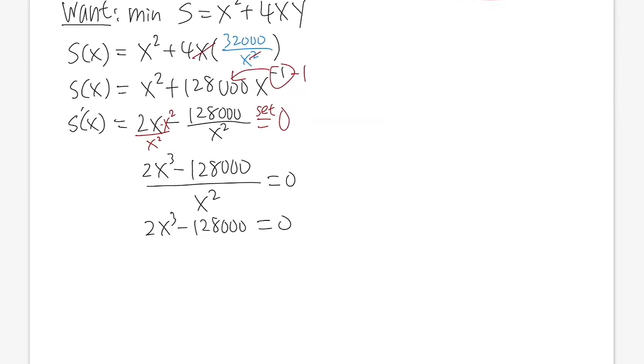Put this to the other side, so we have 2x³ equals 128,000. Divide both sides by 2: x³ equals 64,000. Here we can just take the cube root on both sides.